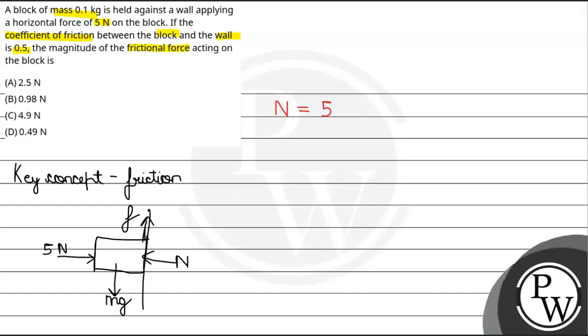In the vertical direction, first of all friction force. What is the formula? f = μN, where μ is the coefficient of friction.